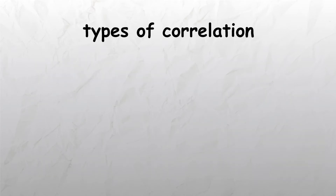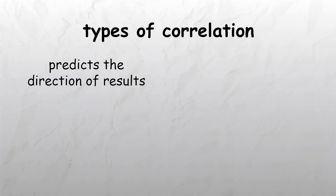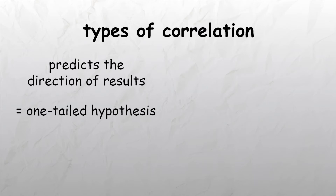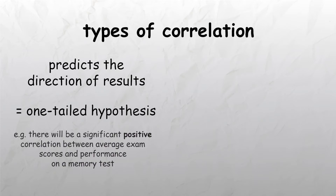When a hypothesis predicts the expected direction of the results, it is referred to as a one-tailed hypothesis, also known as a directional hypothesis. As with the hypothesis about a significant positive correlation between average exam scores and performance on a memory test.